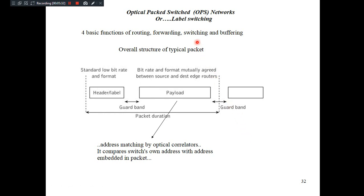Next we have optical packet switching based networks, also known as label switching. The whole large information is divided into small packets, and each packet is sent over the optical medium. Compared to circuit switching, optical packet switching (OPS) works entirely in the optical domain, whereas circuit switching depends on electronics to some extent.